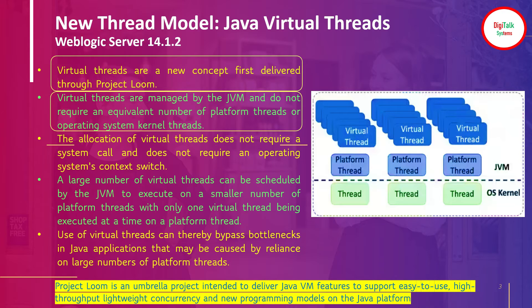Virtual threads are managed by the JVM and do not require an equivalent number of platform threads or operating system kernel threads. Going forward from 14.1.1, virtual threads will be handled by the JVM, so application and transaction requests will not have any direct dependency on operating system threads. If you have 40 threads at the OS level, you can currently handle 40 concurrent requests. But with virtual threads, each physical thread may split into multiple virtual threads — so if each of the 40 physical threads corresponds to 10 virtual threads, you now have 400 threads available instead of 40.